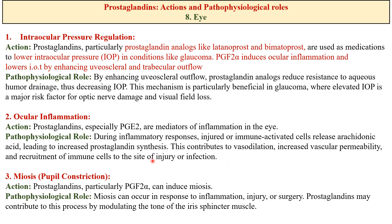Due to increased permeability, immune cells migrate from blood vessels to the site of injury or infection to kill pathogens and damaged cells. Next is miosis or pupil constriction: prostaglandins, particularly PGF2α, can contribute to miosis by causing contraction of the muscles in the iris, leading to pupillary constriction. Prostaglandin analogs used in glaucoma treatment may also induce miosis as a side effect. Miosis can occur in response to inflammation, injury, or surgery, with prostaglandins modulating the tone of the iris sphincter muscles.